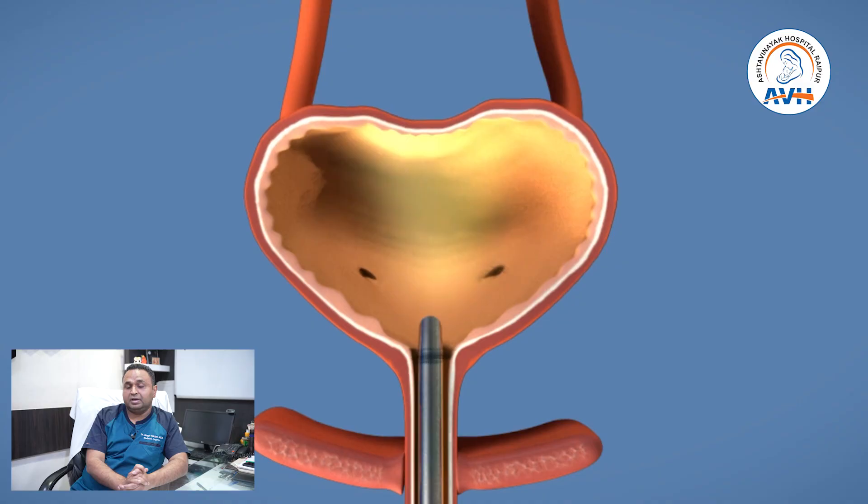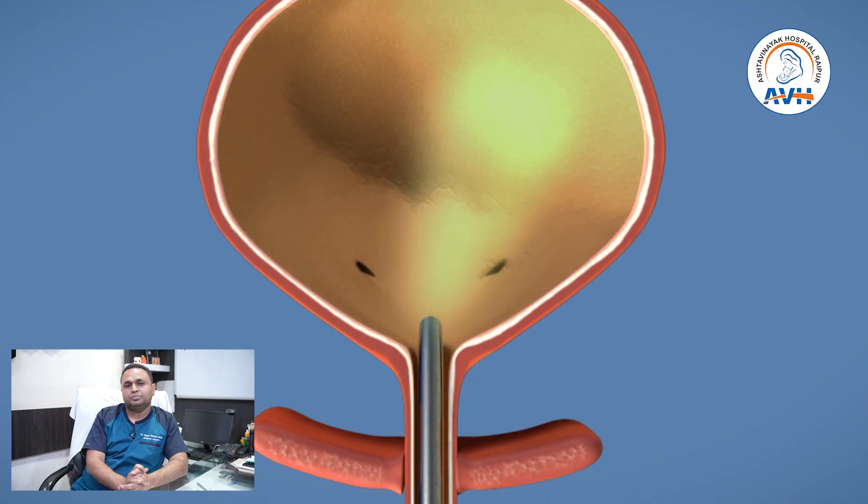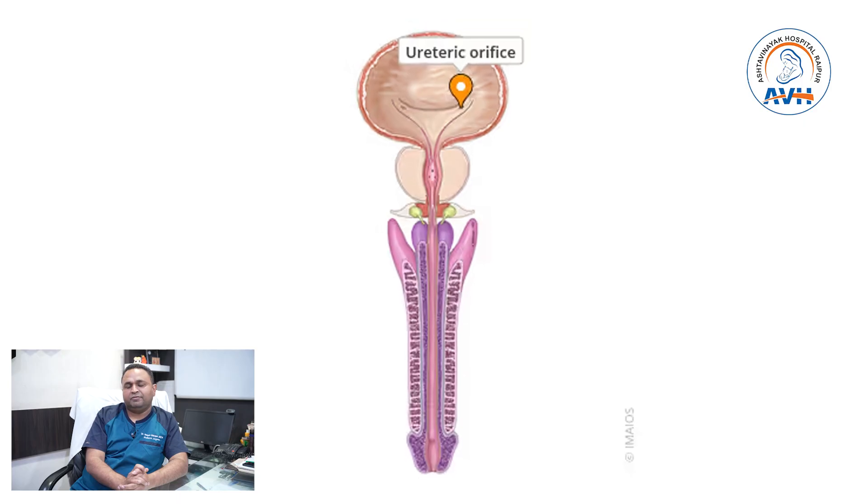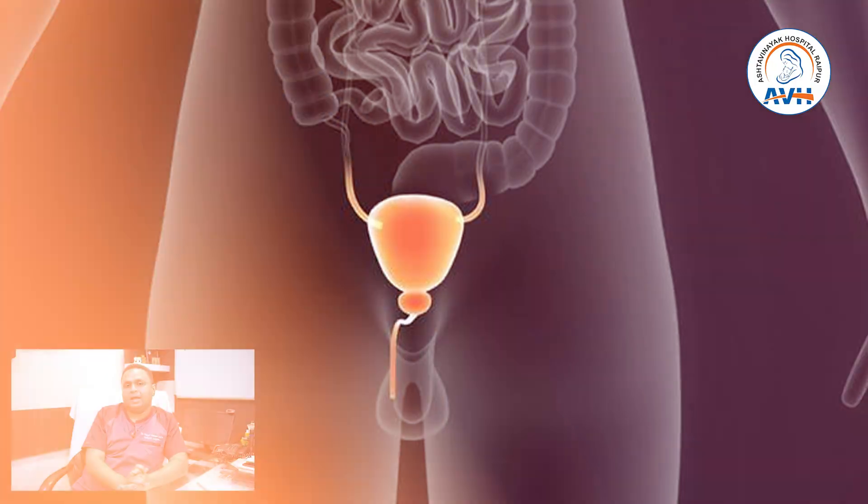We examine the whole of the urethra up to the bladder, see both the ureteric orifices, and note down findings meticulously. Mostly we get a trabeculated bladder and hypertrophied bladder neck and valves at the posterior urethral junction. Using a Bugbee or ball electrode, or a cold knife, we cut the valves at 5 o'clock, 7 o'clock, and 12 o'clock positions or in different combinations.